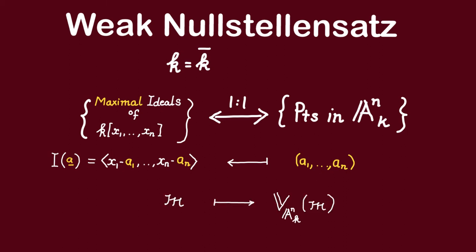To every point, we can associate the ideal of functions vanishing at the point, which we have established is a maximal ideal. And conversely, to every maximal ideal, we can associate its sets of zeros in the affine space. So now, let us show that every maximal ideal of the polynomial ring must be of this form.